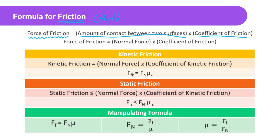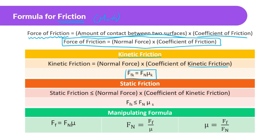The formula makes sense here: force of friction is equal to normal force times the coefficient of friction. More specifically, kinetic friction — force of friction kinetic is equal to the normal force times the coefficient of kinetic friction.